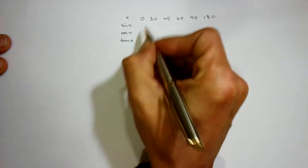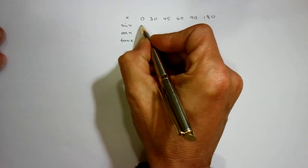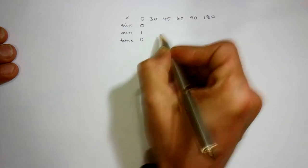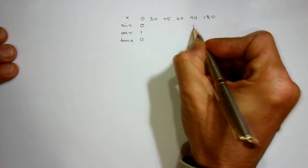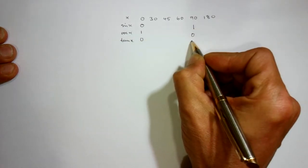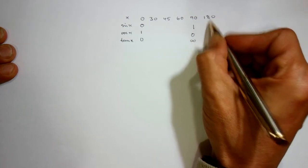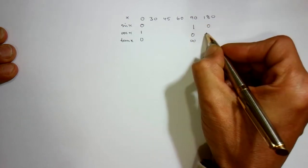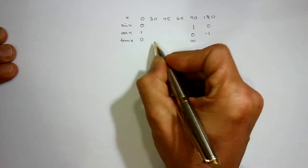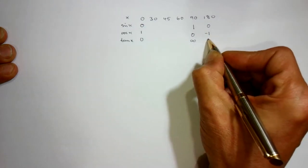So sin x, cos x, and tan x of 0: sin x starts at 0, this one is 1, that's 0. At 90, sin gets up to 1, cos comes down to 0, tan is not defined or infinite. Sin x at 180 is back to 0, cos has gone down to minus 1, and tan has come back to 0 again.